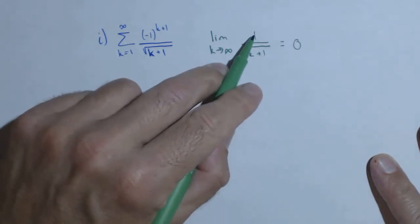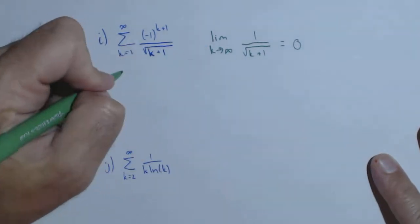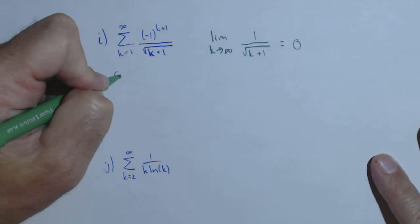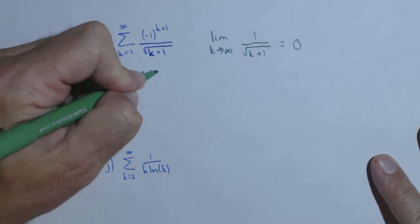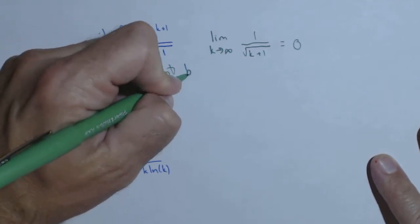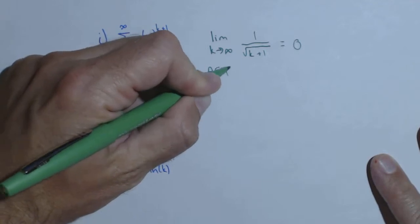Because the denominator grows, the numerator does not. This goes to 0, it was an alternating series, this first one is convergent by the alternating series test.